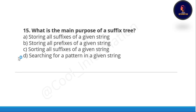Next question: what is the main purpose of a suffix tree? Note this is different from the earlier question about suffix array. Option A is storing all suffixes of a given string, option B is storing all prefixes, option C is sorting all suffixes, option D is searching for a pattern in a given string. Option D is correct — the main purpose is searching for a pattern in a given string.